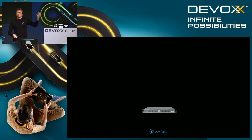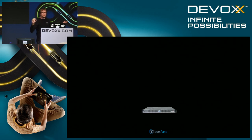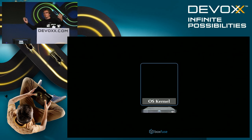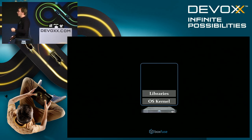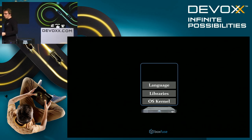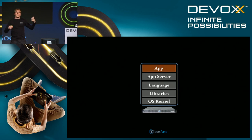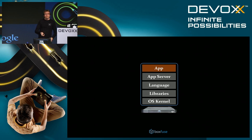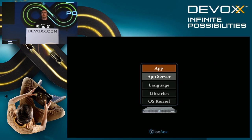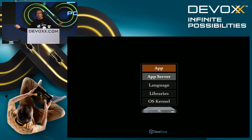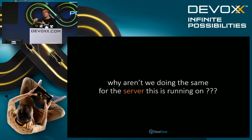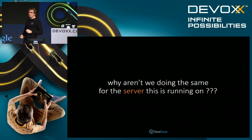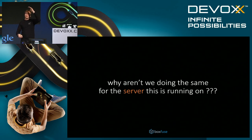If we look at the server where our software runs, we have layers: hardware, OS kernel, libraries like the C library, language runtime (the JVM), an app server, and our application. The CI story we've described really only addresses the top two layers. We should ask ourselves: why aren't we applying these same valuable principles to the rest of our server — to all the other layers?